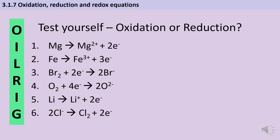In the first two examples the species on the left hand side has lost some electrons — we've got electrons that have been split apart and we've been left with a positive ion — so those are oxidation. In the next two examples the species on the left hand side has gained some electrons to make negative anions, so those are reduction. And in the final two examples we've got electrons being lost again, so again it's oxidation.